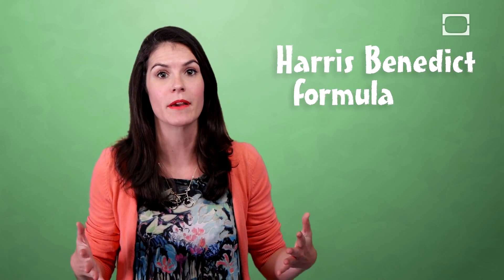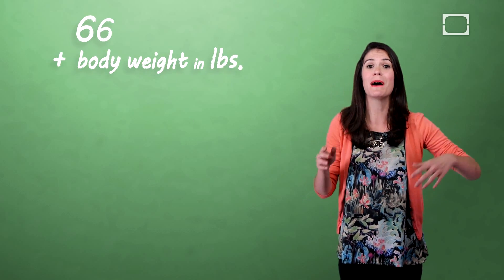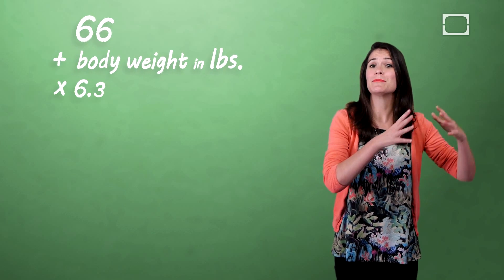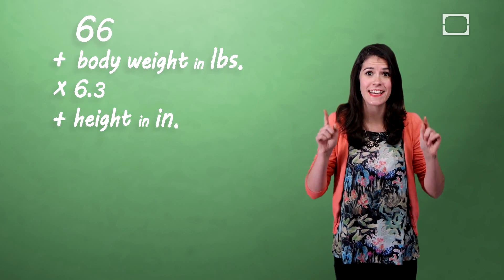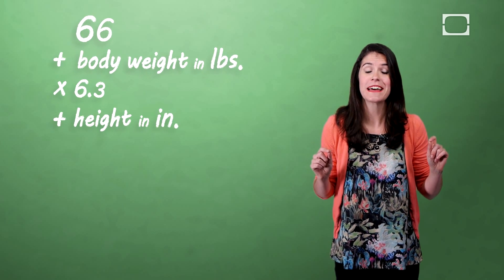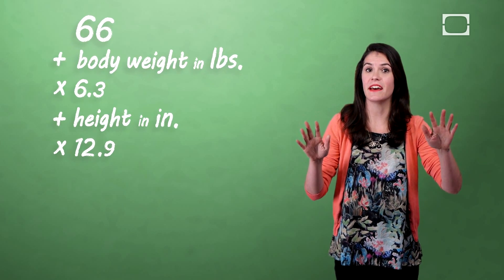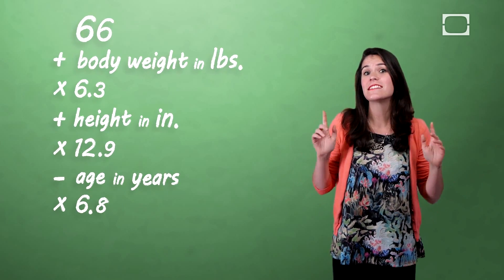One of the most accurate methods for estimating your basal metabolic rate is something called the Harris-Benedict formula. For an adult male, get out your pencil and paper. You're gonna take the number 66, add your body weight in pounds (sorry, Canada, you gotta convert those kilograms), multiply that number by 6.3, add in your height in inches (yet again, sorry, metric system folk), and then multiply that by 12.9. We're not done yet.